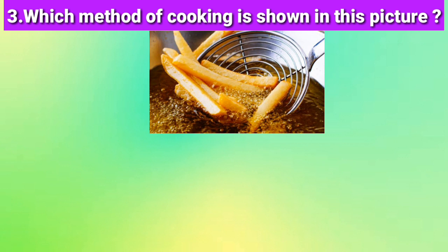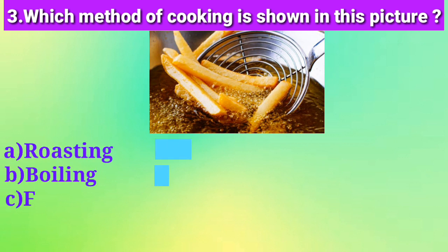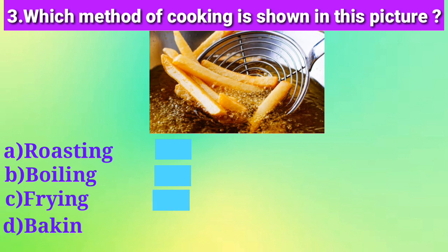Next: which method of cooking is shown in this picture? The options are roasting, boiling, frying, or baking. The correct option is option C. You know, frying means to cook the food in oil.